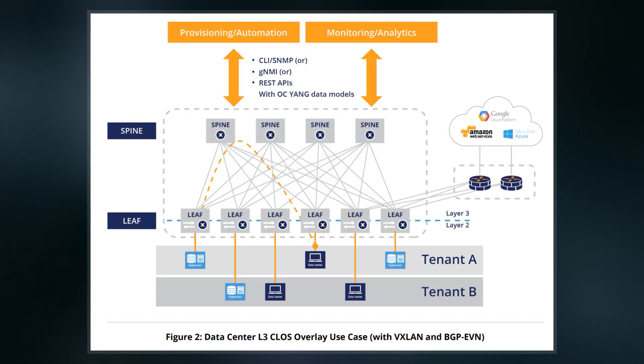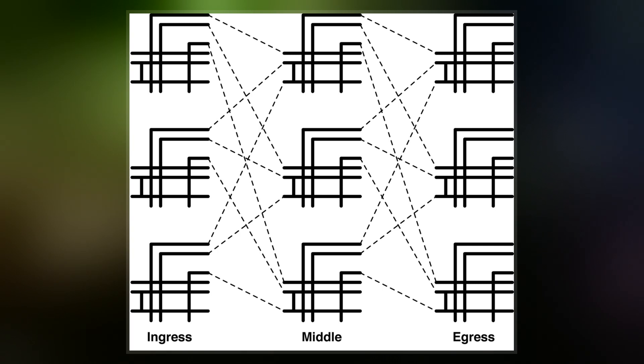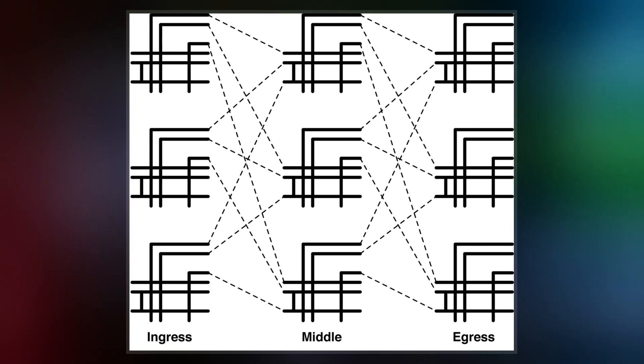n represents the number of sources which feed into each of r ingress stage crossbar switches. Each ingress stage crossbar switch has m outlets, and there are m middle stage crossbar switches.